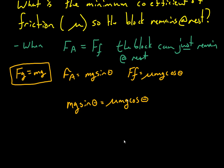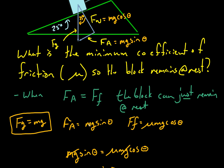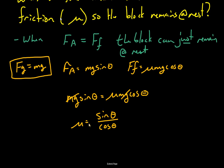The minimum mu value we find here is the value such that if you have a mu equal to that or greater, the net force on the object is zero. Now look: we have MG on both sides, so divide off an MG from each side and you get mu equals sine theta over cos theta. At 25 degrees, that gives you sine 25 degrees divided by cos 25 degrees, which equals 0.47.